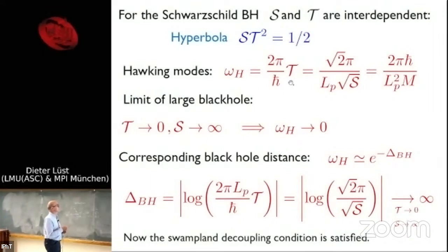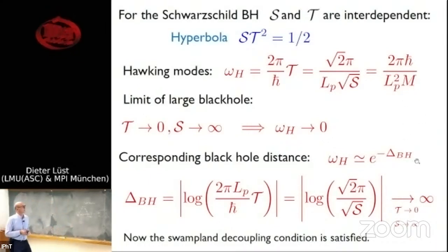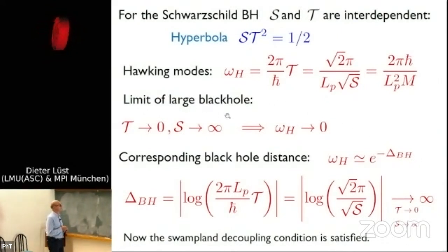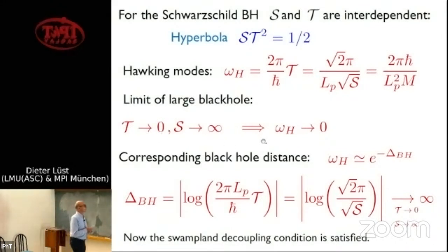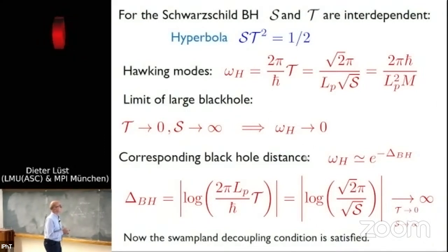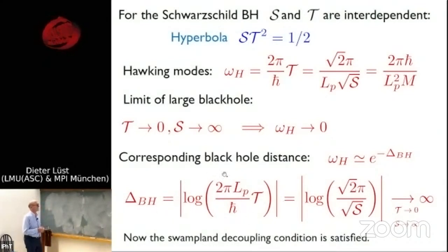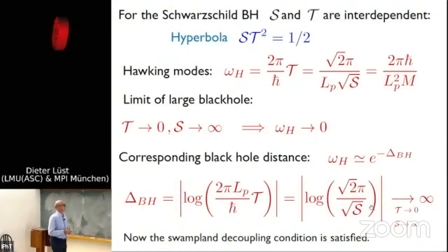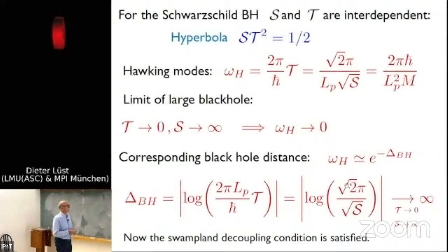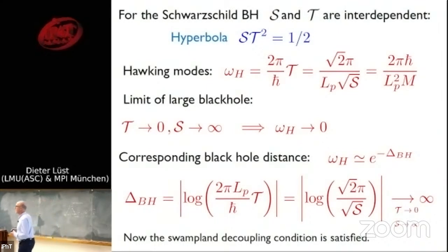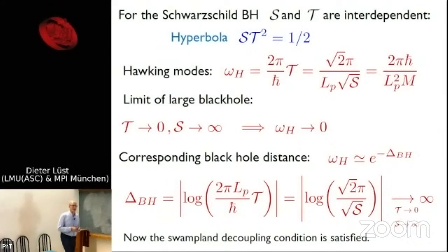The Hawking frequencies are proportional to temperature T, or expressed in terms of mass, they go like 1/(m·l_P²). In the limit of large black holes where T → 0 or S → ∞, the Hawking modes become massless and the swampland decoupling condition is satisfied. We can now formulate a swampland conjecture involving temperature: there is a temperature distance functional giving the right scaling, going like log T or like log(1/√S). The Hawking modes in the limit of large entropy or small temperature become light.